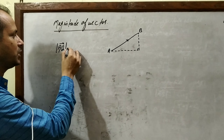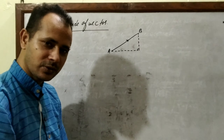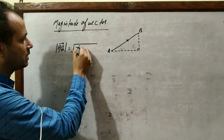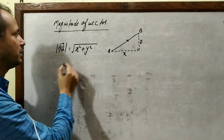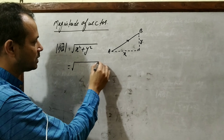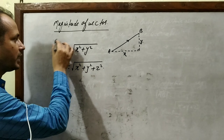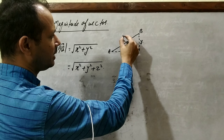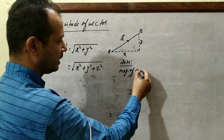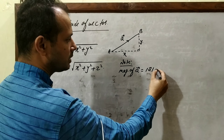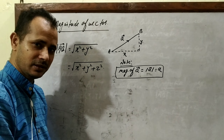The magnitude of vector AB is denoted by |AB| — this is also called the modulus of the vector. It can be calculated using the formula: root of (x² + y²), where x is the x-component and y is the y-component. This is for a plane vector. In case of space, it becomes root of (x² + y² + z²). The magnitude of a vector is also denoted simply as |a| or a.